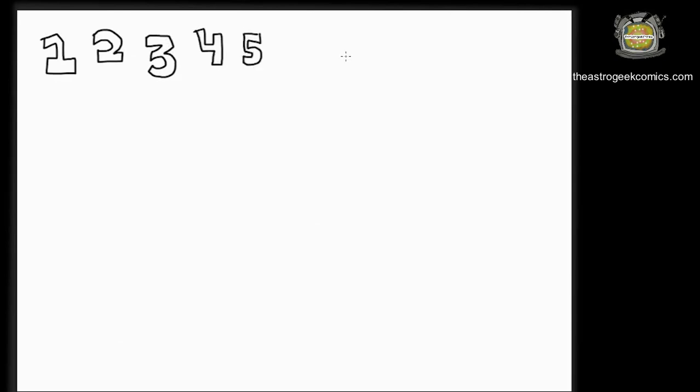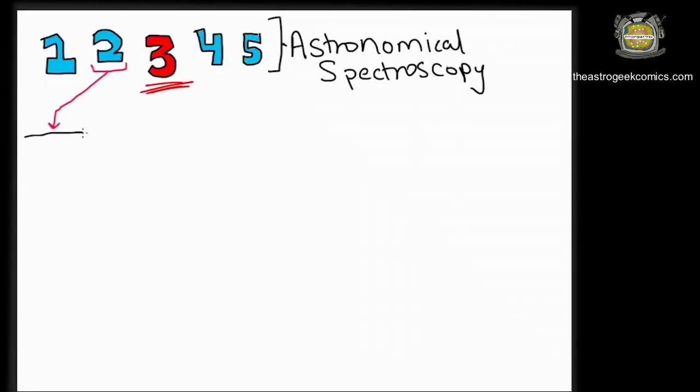This video is the third in line in the series Astronomical Spectroscopy. In the last video, I talked about the Emission and the Absorption Spectrum and how these spectrums are unique for every element. The spectrum of an element is its fingerprint, its ID.